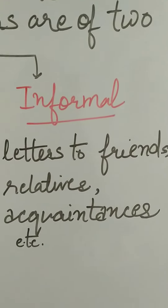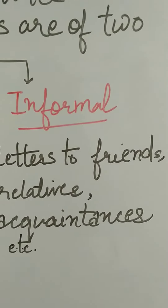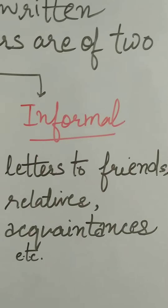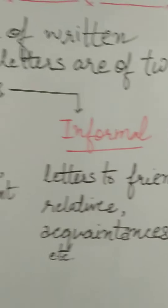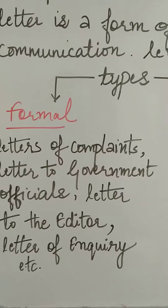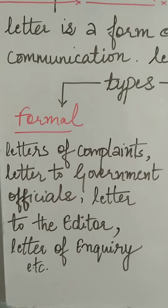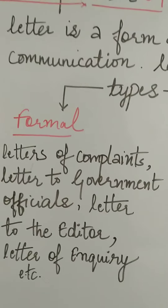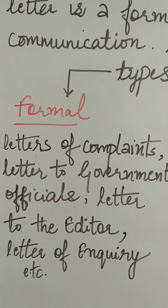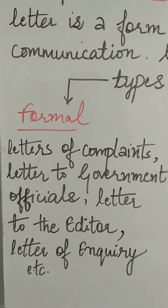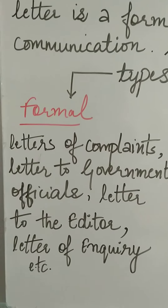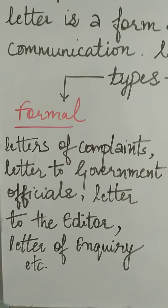In an informal letter, we write to a friend, relative, or acquaintance. What is an acquaintance? Acquaintances are generally people who are known to us but are not very close, like friends or relatives.